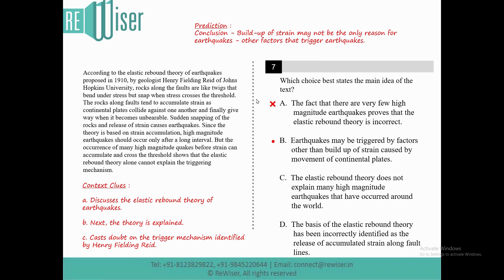Option C states that the Elastic Rebound Theory does not explain many high magnitude earthquakes that have occurred in the world. Option C is clearly incorrect because that is not the focus of the text. The author concludes that there may be factors other than the buildup of strain — not simply that the theory fails to explain high magnitude earthquakes around the world. So Option C can be eliminated.